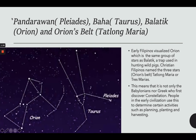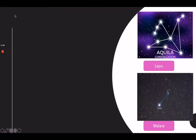Did you know that other countries have their own local names for constellations? People in ancient times relied on these greatly to plan activities throughout the year. Early Filipinos visualized Orion as 'Balate,' a trap used in hunting wild pigs. Christian Filipinos named the three stars of Orion 'Tatlong Maria' or 'Tres Marias.' This shows that it was not only the Babylonians who discovered constellations. People used them to determine activities such as planting and harvesting. We also have the local name 'Lipo,' equivalent to Aquila, and 'Malara.'